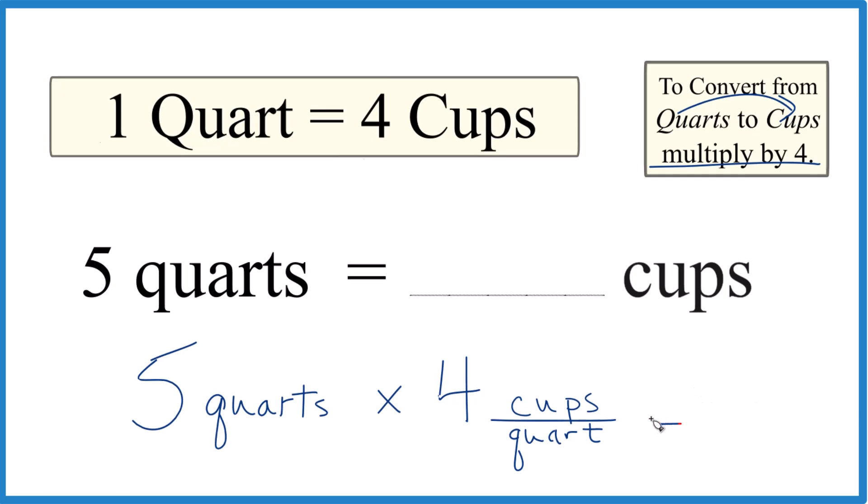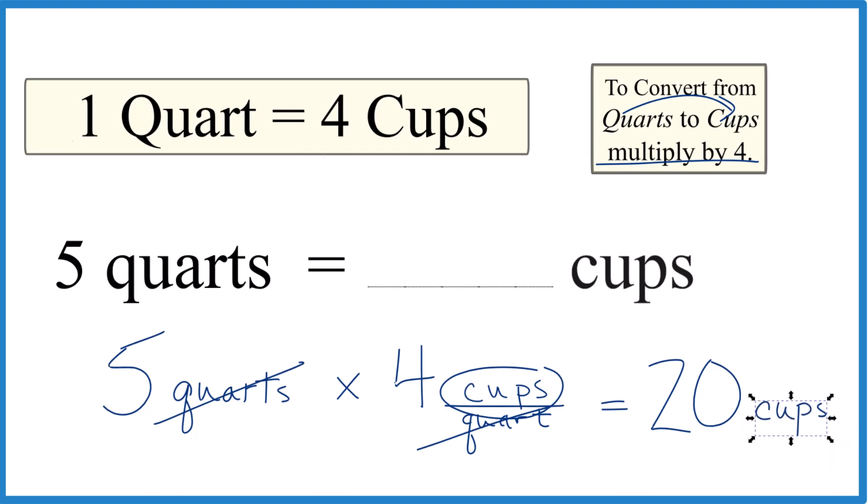So it's the same thing we did before. Five times four, that gives us 20, but we've got quarts on top here and on the bottom, they cancel out. That leaves us with cups and that is what we're looking for.